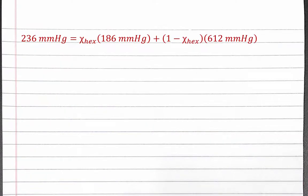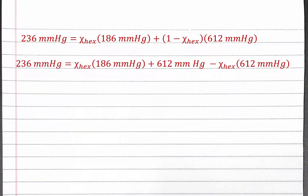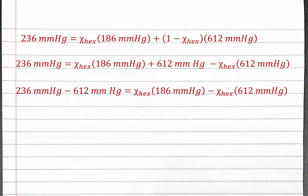First, we'll use the distributive property to multiply 1 minus the mole fraction of hexane by 612 mmHg. Next, we'll get all the numbers on the left side by subtracting 612 mmHg from both sides. Then we can complete the subtraction on both sides, combining the numbers and coefficients for the mole fraction of hexane.